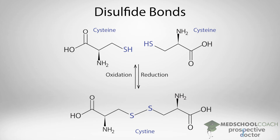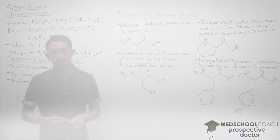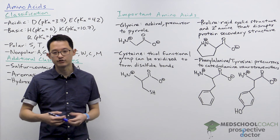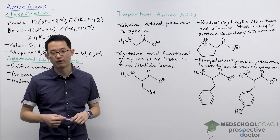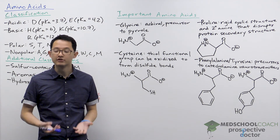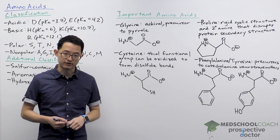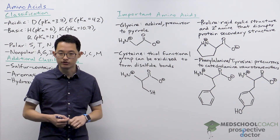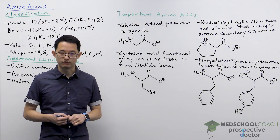Since oxidation is required to form disulfide bonds, breaking a disulfide bond requires reduction. A very common reducing agent used in biology is beta-mercaptoethanol, which you may have heard of in your biology or biochemistry courses.